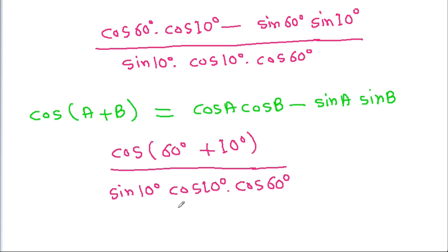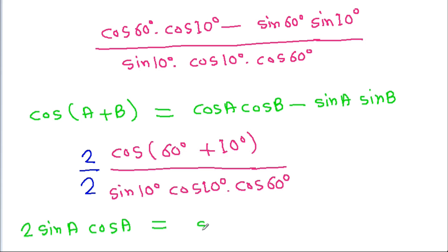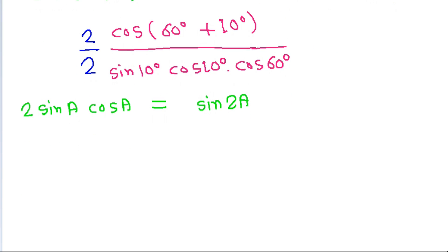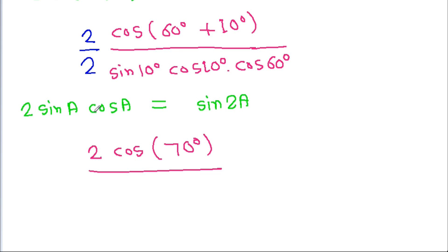If we multiply and divide by 2, we know that 2 sin A cos A equals sin 2A. So the denominator becomes 2 sin 10 degree cos 10 degree, multiplied by cos 60 degree, which gives us sin 20 degree times cos 60 degree in the denominator.